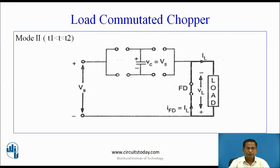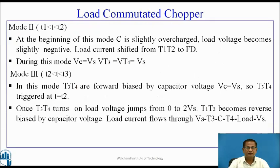Mode 2: t > T1, less than T2. In this duration, all four thyristors remain in non-conducting state. At the beginning of this mode, C is slightly overcharged, the load voltage becomes slightly negative and the load current shifts from T1, T2 to the freewheeling diode. During this mode, Vc = Vs, so voltage across T3 = voltage across T4 = Vs.